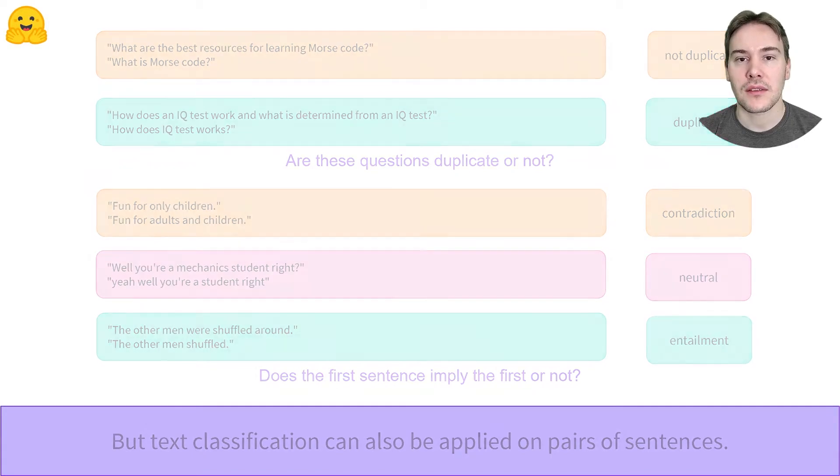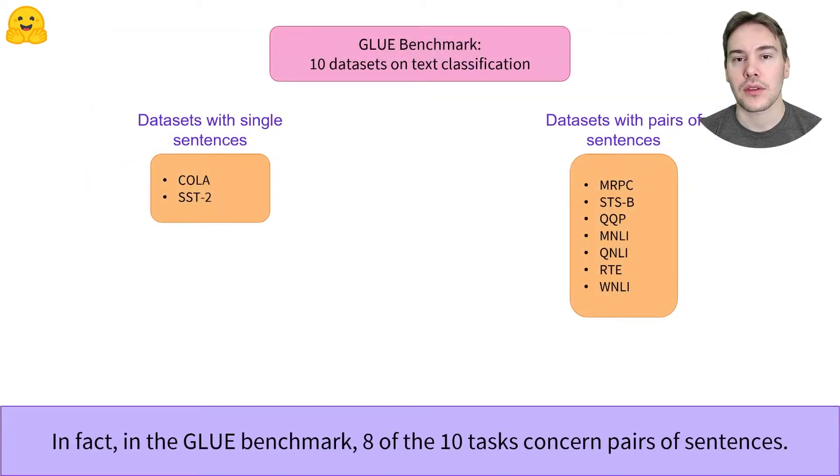So classifying pairs of sentences is a problem worth studying. In fact, in the GLUE benchmark, which is an academic benchmark for text classification, eight of the ten datasets are focused on tasks using pairs of sentences.